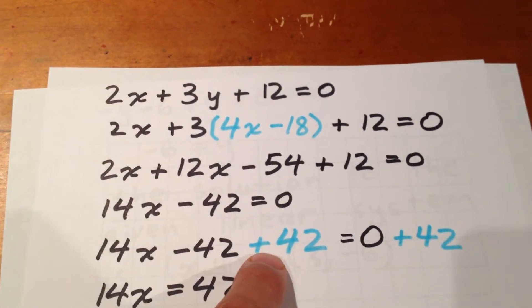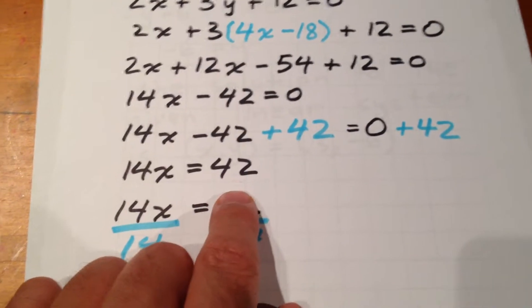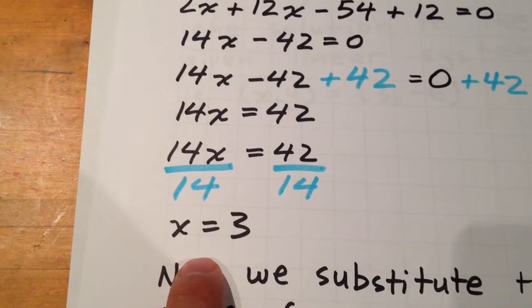We can then isolate the x by adding 42 to each side. We get 14x equals 42. Divide each side by 14 and that gives us x equals 3.